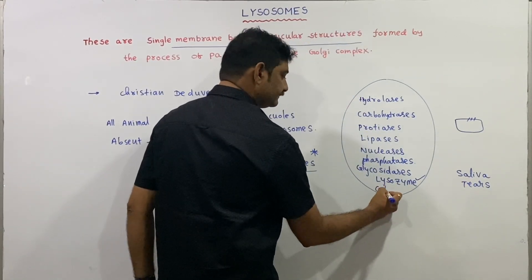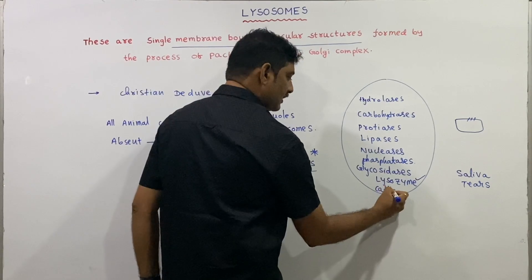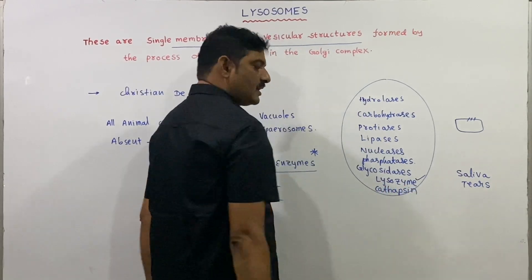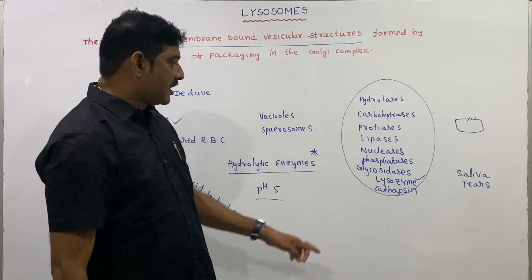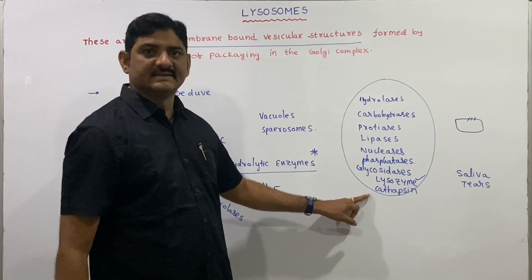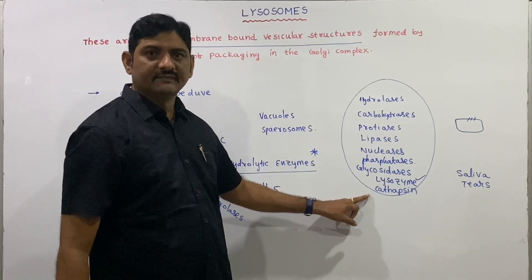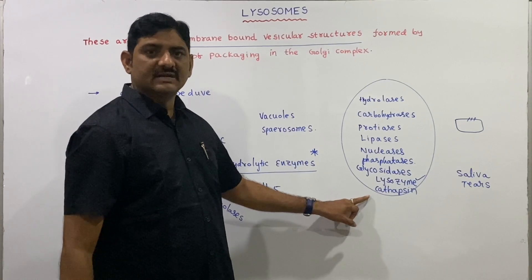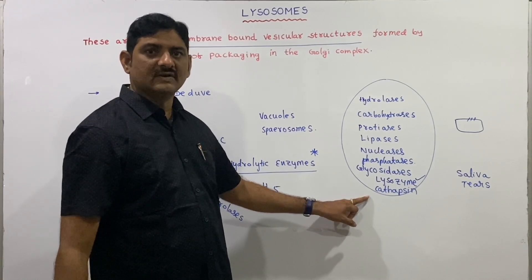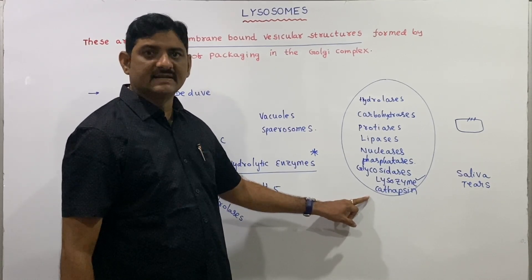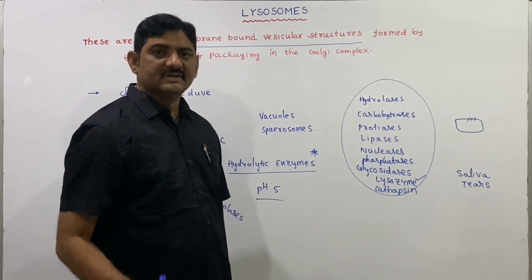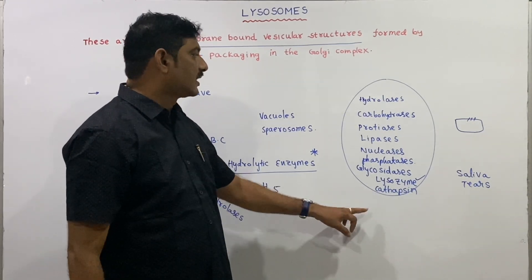Next is cathepsin. Cathepsin plays an important role in the metamorphosis of frogs. At the early stage, the tail of the tadpole disappears in the adult stage, and the reason for this is the cathepsin enzyme.